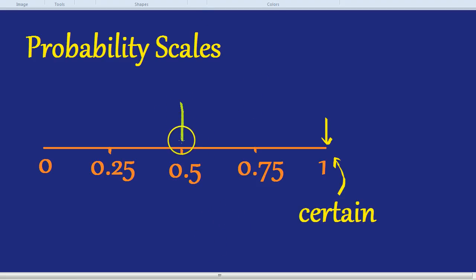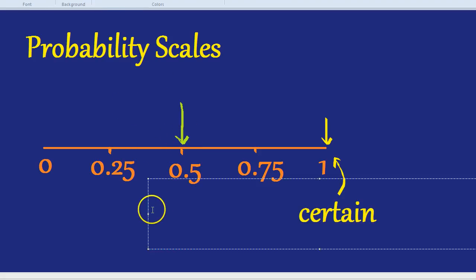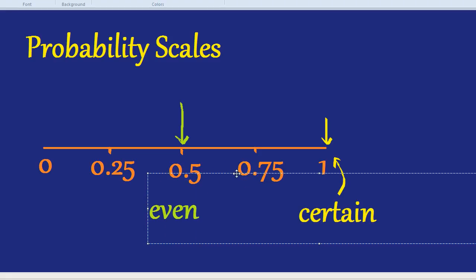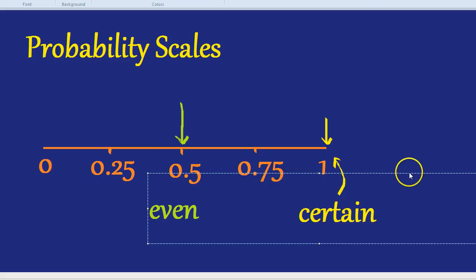So we draw the arrow right there. Another word for that probability is an even chance. It's even because both the chances are equal. Getting a tails is 50% likely, getting heads is 50% likely. So we say that has an even chance.